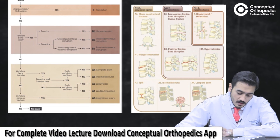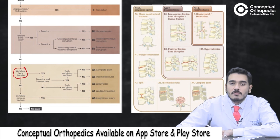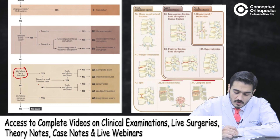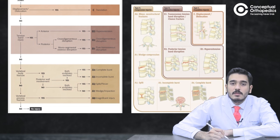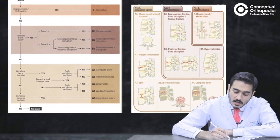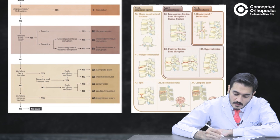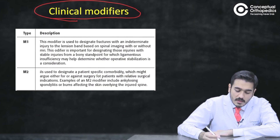To summarize: if there is a vertebral body fracture, check whether the posterior wall is involved — if so, it will be A3 or A4. If the posterior wall is involved and both end plates are involved, it is A4; if one end plate is involved, it is A3. If the posterior wall is not involved and both end plates are involved, it is A2; if only one end plate is involved, it is A1.